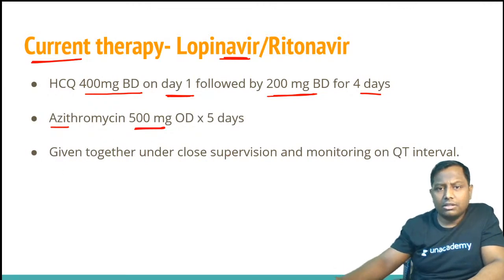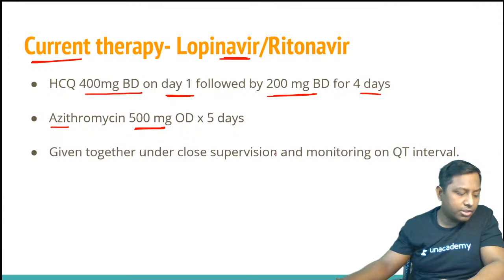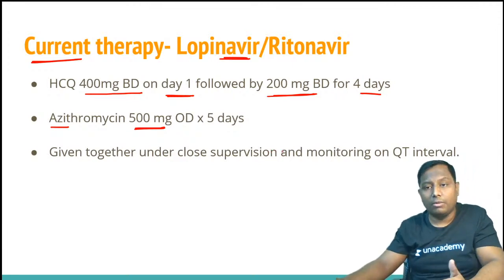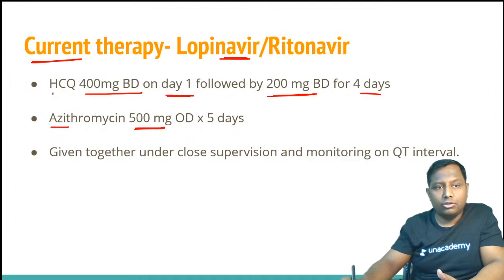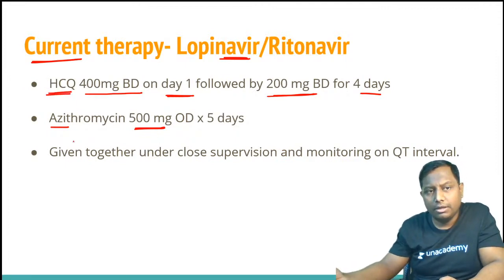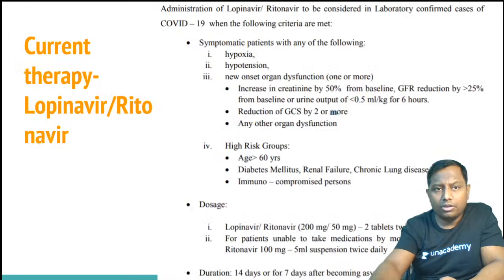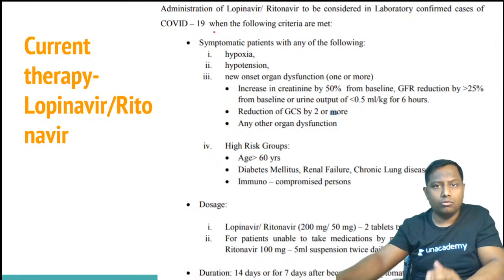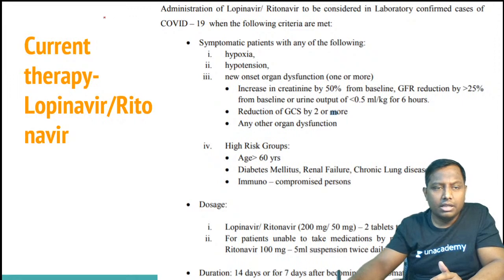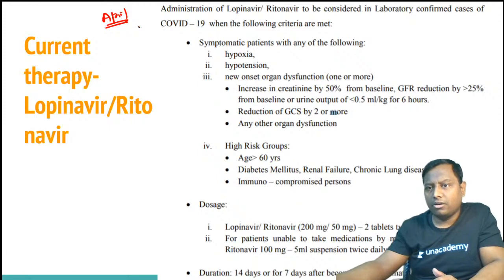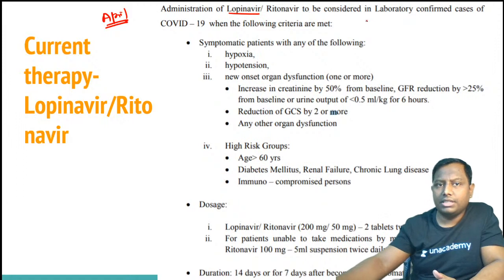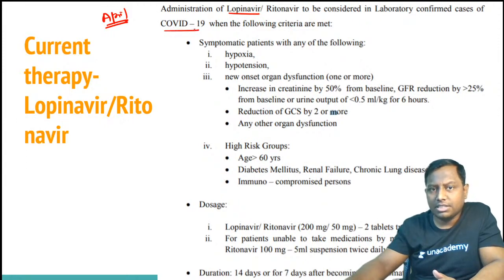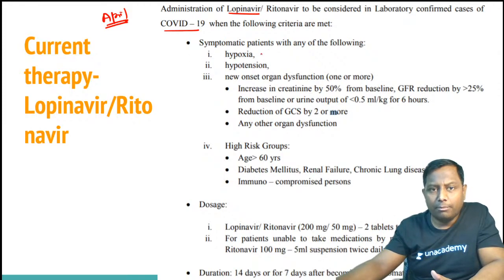These drugs are given together under close observation with ECG monitoring of the QT interval, because both hydroxychloroquine and azithromycin are cardiotoxic and affect the QT interval. Lopinavir and ritonavir are given according to the April guideline only to laboratory-confirmed cases — not as prophylaxis. They are given to symptomatic patients with hypoxia, hypotension, or new onset organ dysfunction.